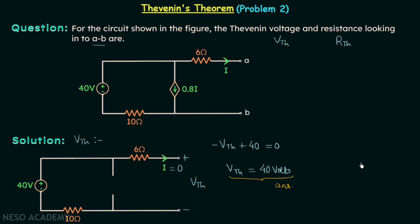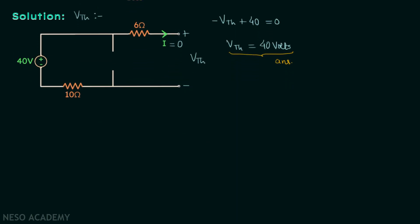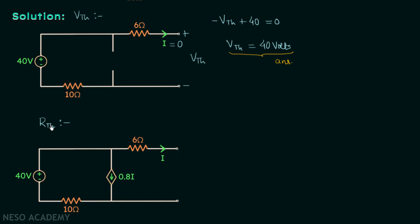Now we will move on to the calculation of RTH, which is very important to understand when we have a dependent source present. To calculate RTH we need to turn off all the independent sources. We have one independent source in the network — we will turn it off by replacing it with a short circuit. RTH is the equivalent resistance between the two terminals looking from this side.